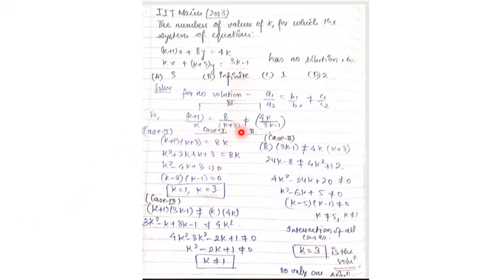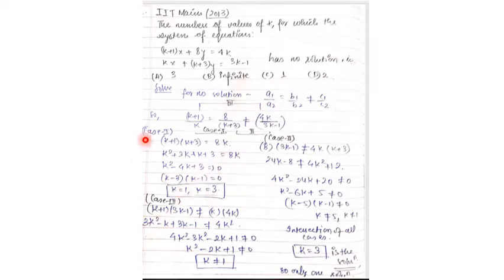Three cases are formed. The first case is (k+1)/k = 8/(k+3) ≠ 4k/(3k-1). We cross-multiply and solve Case 1, getting k = 1 and k = 3.